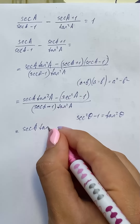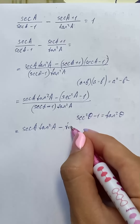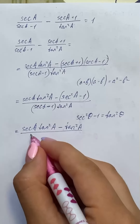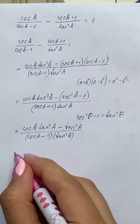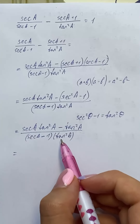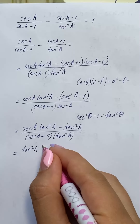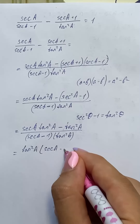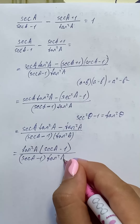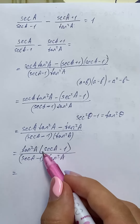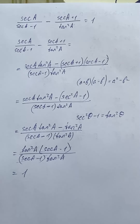So we have secant of a times tangent squared of a minus tangent squared of a, over secant of a minus one times tangent squared of a. We can factor and reduce tangent squared of a and secant of a minus one, and we get one — so we get the right hand side, hence the identity is proved.